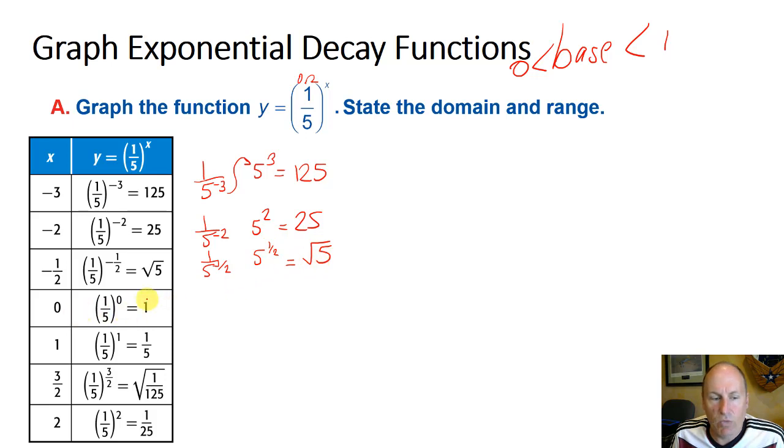At 0, we just get 1, because anything to the 0 power is 1. At 1, we get 1 fifth to the 1, or 1 over 5. And at 3 over 2, we get 1 over 5 to the 3 over 2, which is the square root of 1 over 125. At 2, we get 1 fifth to the second power, or 1 over 25. You could probably get away without doing those two.